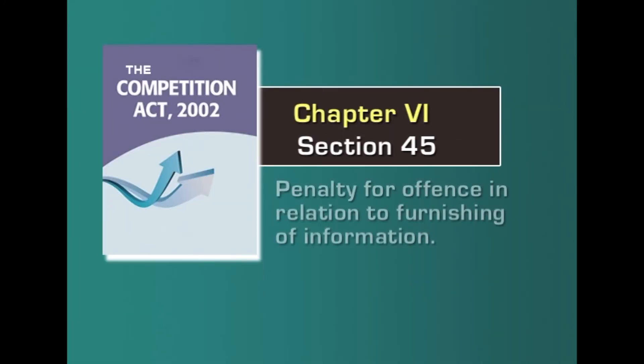Section 45 deals with penalty for offences in relation to furnishing of information. Failure to furnish information, or if a person furnishes false information or omits to furnish such information as called by the commission, is liable for a penalty which may extend to rupees 1 crore, and the commission may pass such other orders in connection thereto. Section 44 particularly deals with information related to combinations called for by the commission, while section 45 deals with general information called by the commission in relation to any enquiry under the act. Both sections relate to furnishing of information in two different contexts.